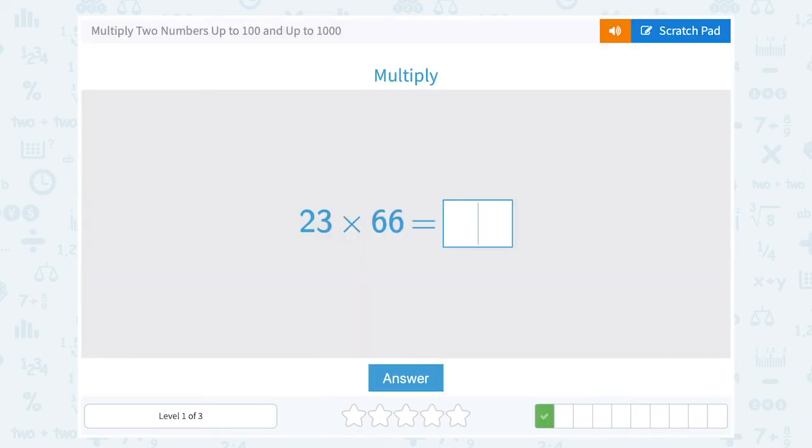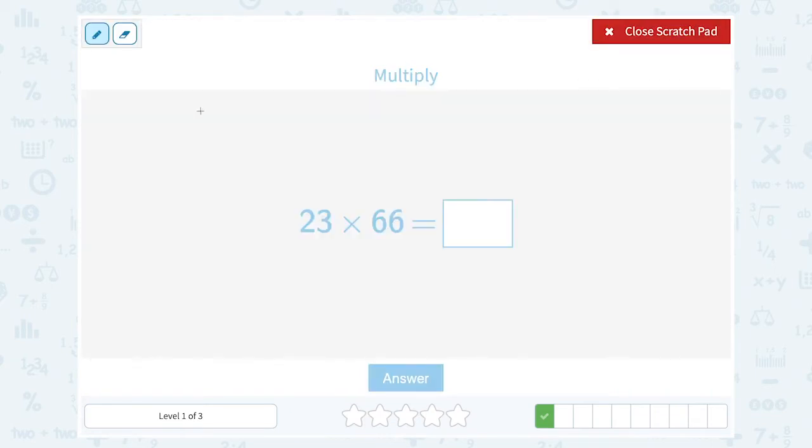23 times 66. So I'm going to write my numbers this way, 23 times 66, just to make it easy for me to line up our numbers like we did last time. And the reason I like to write it this way is it allows me to see what's happening in the ones place, the tens place, and so on.